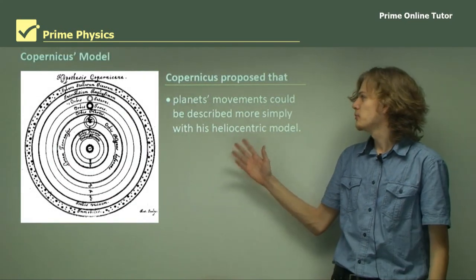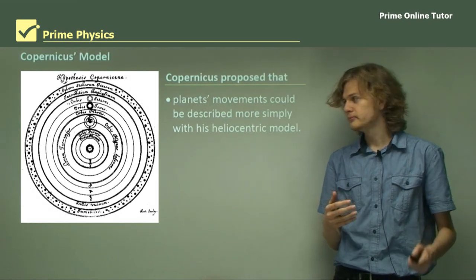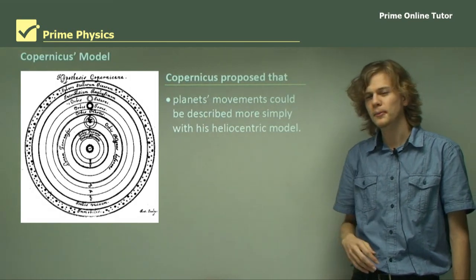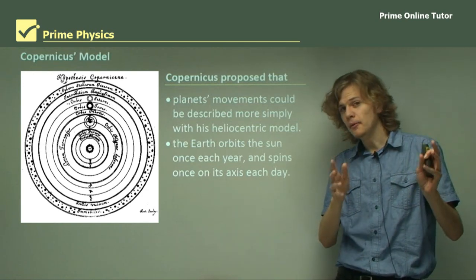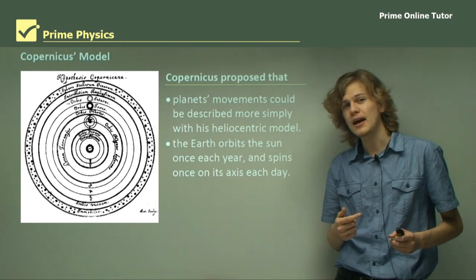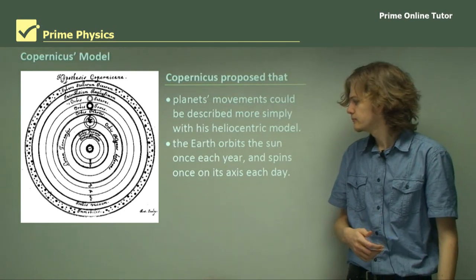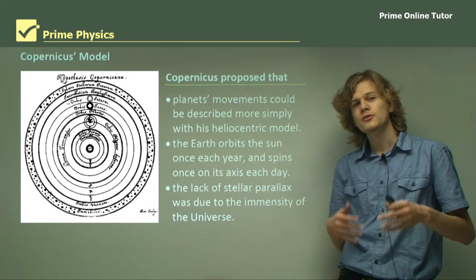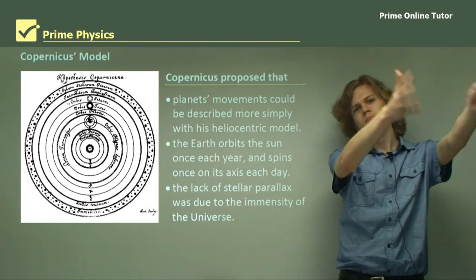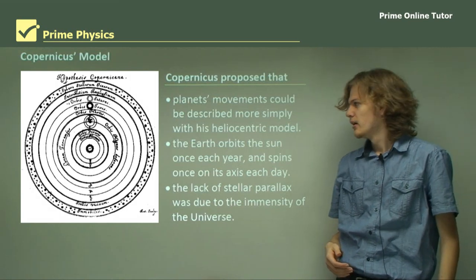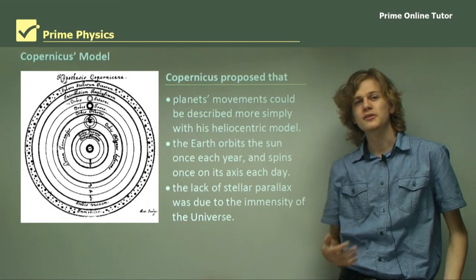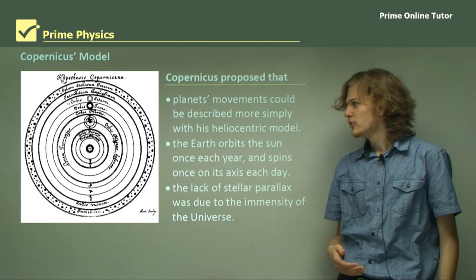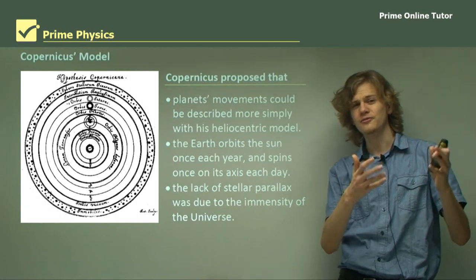Copernicus's idea was that planets' movements could be described more simply with his heliocentric model. As you can see in the diagram, the Sun is right in the middle and the Moon is still going around the Earth. He said the Earth orbits the Sun once each year and spins on its axis once per day — that's what causes the Sun to appear to rise and set. He also said the lack of stellar parallax was due to the immensity of the universe, making him the first astronomer to suggest the stars were millions and millions of miles away, far beyond the 20 Earth radii that others had assumed.